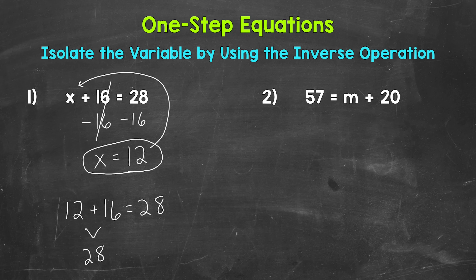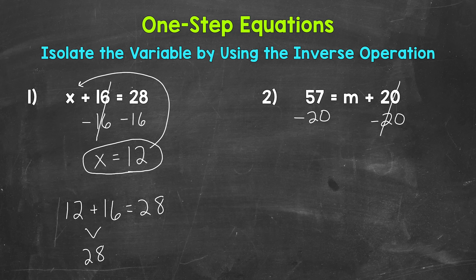Let's move on to number two, where we have 57 equals m plus 20. We need to isolate that variable of m. 20 is being added to m, so we need to undo that addition using the inverse operation. The inverse of addition is subtraction, so let's subtract 20 from this side of the equation. Now whatever we do to one side of the equation, we must do to the other. So let's subtract 20 from this side as well. Now on the right side of the equation, we are adding 20 and subtracting 20. So these 20s cancel out.